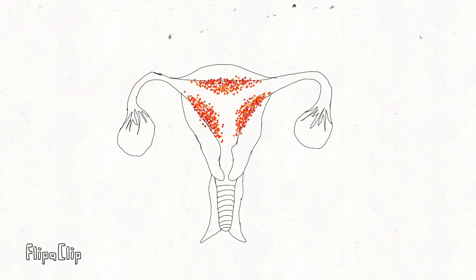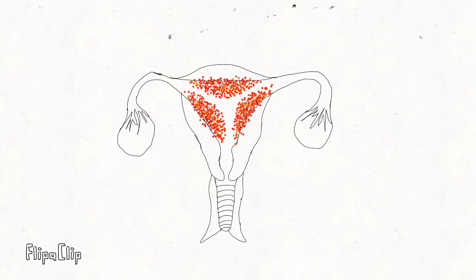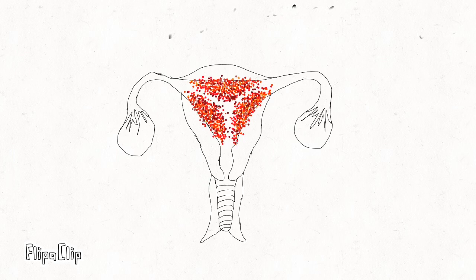Other than that, the uterus lining starts to thicken, ovaries produce ova and sex hormones, and they will start to have their menstrual cycle. When the uterus lining becomes too heavy, it will start to break and fall off the uterus and come out through the cervix and vagina. This is called the menstruation phase.